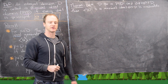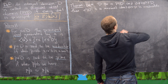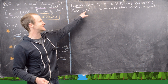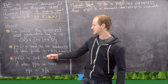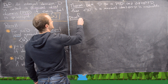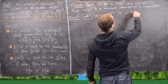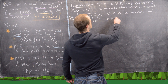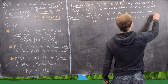Building on that lemma, here is a bigger result with an important corollary. If D is a PID and P is a non-zero element, then the ideal ⟨P⟩ is a maximal ideal if and only if P is irreducible as an element. Recall that irreducible means if you factor P into two things, one of them must be a unit. This is an if and only if, so we have two directions. Let's start with the forward direction: suppose ⟨P⟩ is a maximal ideal.